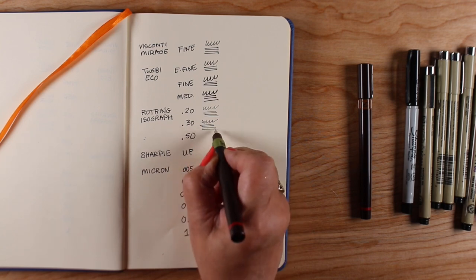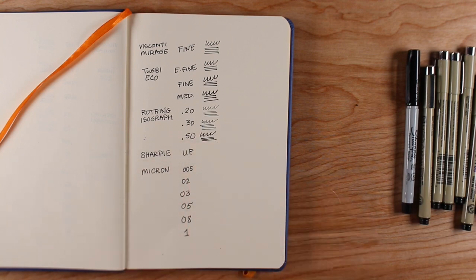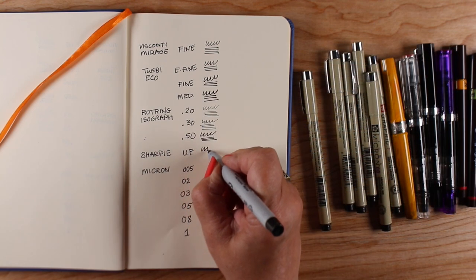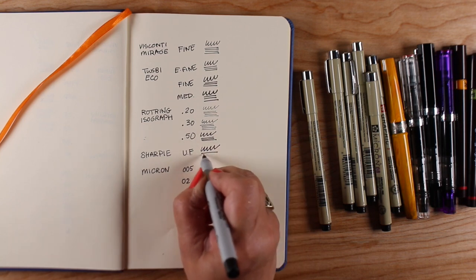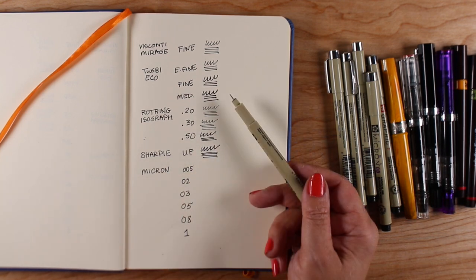So they do have an ink well, you just need a dropper to put it in and they have these really fine widths though. Look how skinny those are. There's sometimes when I need that kind of a thin nib, there's just something that it does that nothing else does.